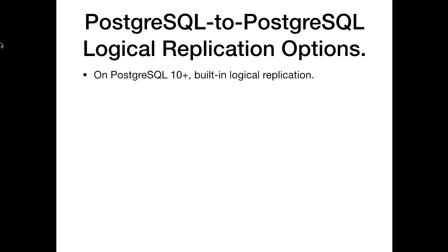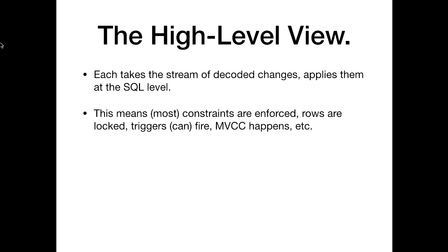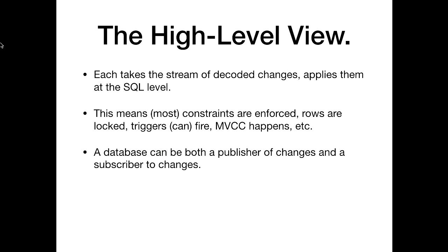On Postgres 10 and higher, we have built-in logical replication, which is based on this framework. On 9.4 and higher, we have a plugin written by the people at Second Quadrant called PG Logical, that also does logical replication. The high-level view is it takes these changes, turns them back into SQL, and applies them at the SQL level. This means constraints are enforced, rows are locked, triggers can fire, multi-version concurrency control happens — it really is just like running SQL statements on the other server. A single database can be both a publisher and a subscriber of changes.